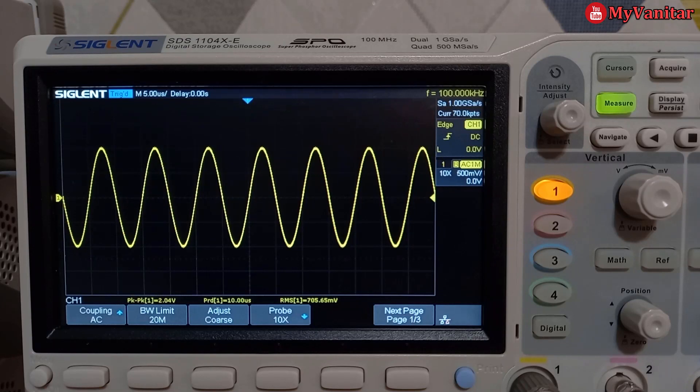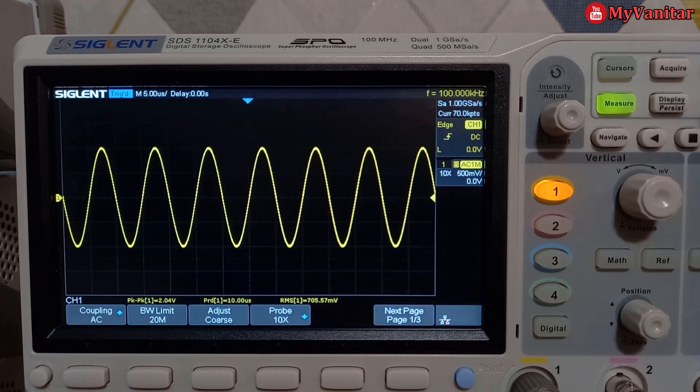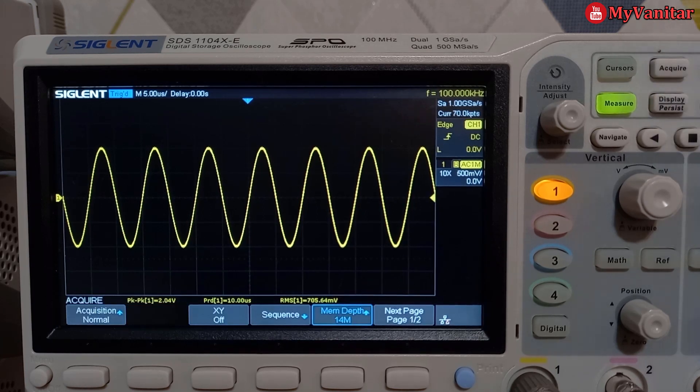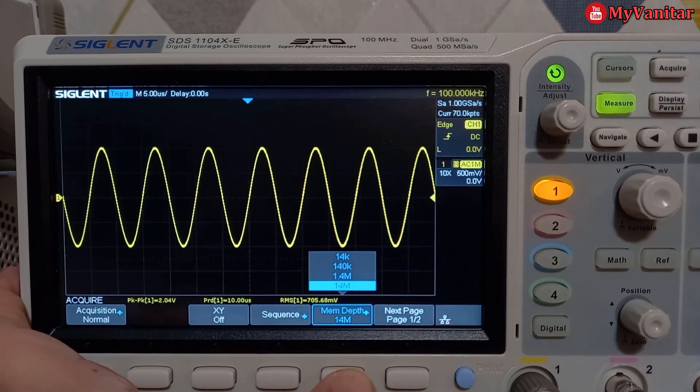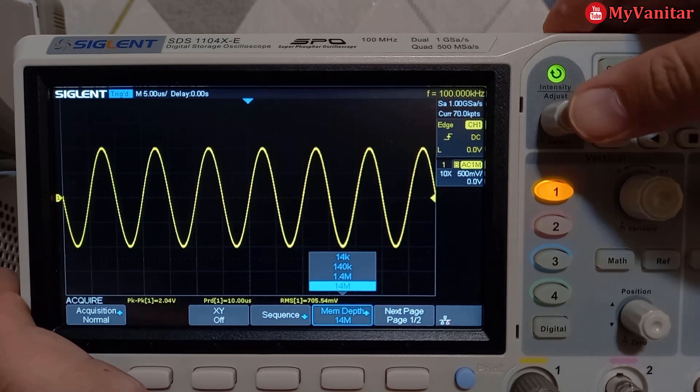Alright, for the first test I start with a 100 kilohertz sine wave signal. Now I configure the device to replicate the process. Press the acquire menu and then select the highest memory depth. In this device it's 14M, which is very good.